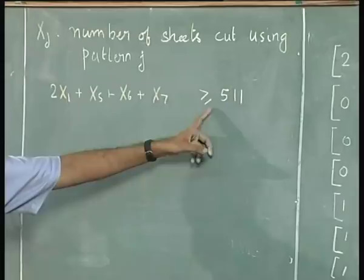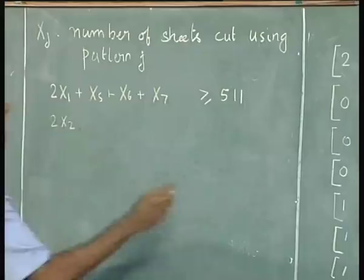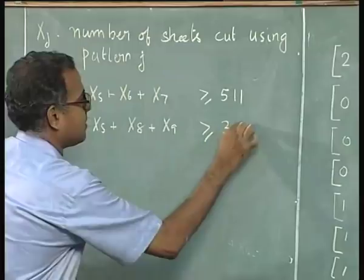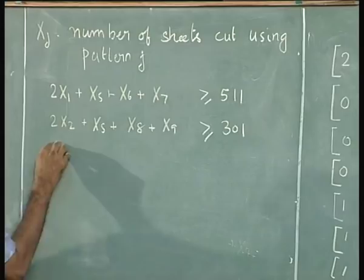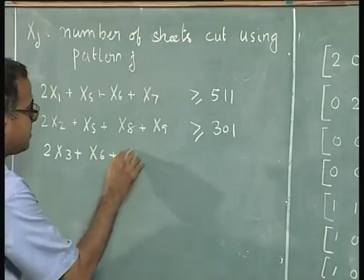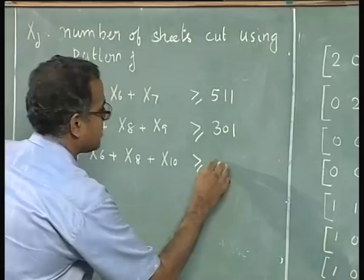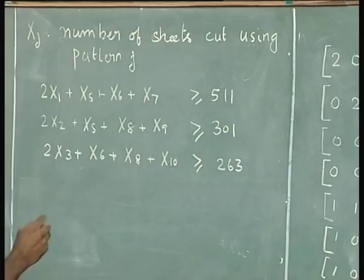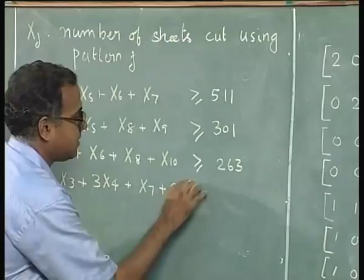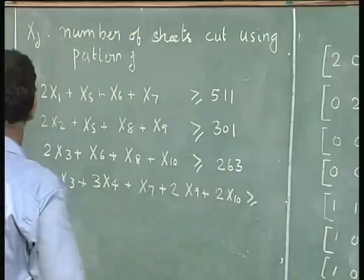Similarly, for 8-inch sheets: 2X2 + X5 + X8 + X9 ≥ 301. For 7-inch sheets: 2X3 + X6 + X8 + X10 ≥ 263. For 6-inch sheets: X3 + 3X4 + X7 + 2X9 + 2X10 ≥ 383.